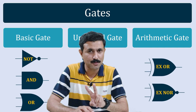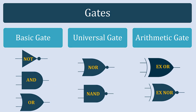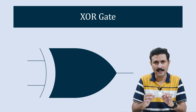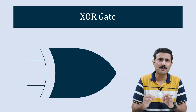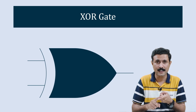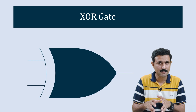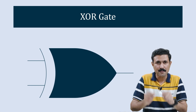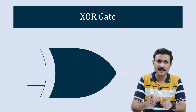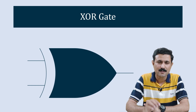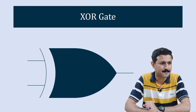We are going to start with the XOR gate. Here you can see the symbolic representation of the XOR gate. To better understand this gate, I recommend that you have a clear idea about basic gates like AND, OR, and NOT. In my previous video I explained all those things with animation in detail. If you are not clear about those concepts, watch that video first and then move ahead.